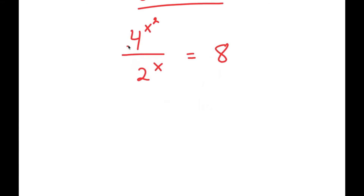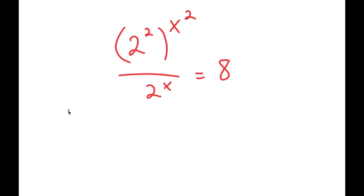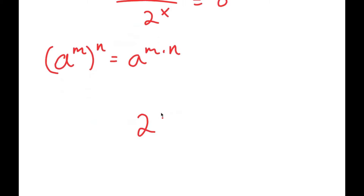What I'm first going to do is rewrite 4 as 2 squared. So I have 2 squared to the power of x squared over 2 to the power of x is equal to 8. If I have something in the form a to the power of m to the power of n, this equals a to the power of m times n. So 2 squared to the power of x squared equals 2 to the power of 2 times x squared.